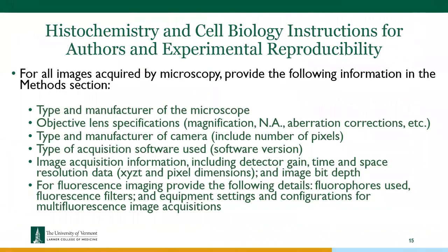In my role as editor, I rewrote the methods section for our journal regarding imaging experiments, which are often difficult to reproduce. Now, anyone submitting a microscopy manuscript must list the type and manufacturer of the microscope, objective lens specifications, type and manufacturer of the camera, acquisition software, all acquisition settings, and for fluorescence, all fluorescence settings. These details typically don't appear in papers but are essential for reproducibility.